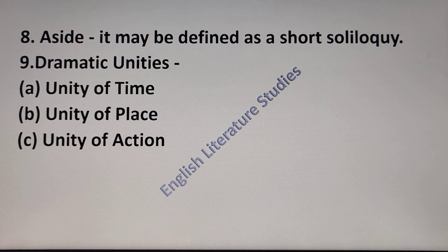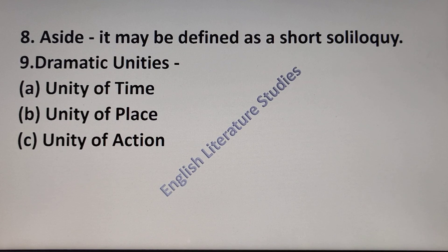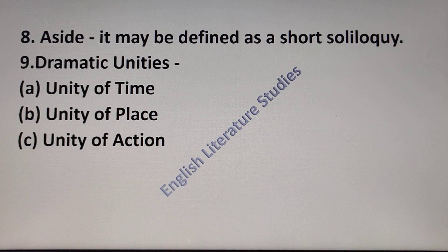The last term is dramatic unities, which is a very important topic in itself. Dramatic unities are the three dramatic principles required to limit the scope and time of drama. Unity of time means action is confined to a single day. Unity of place means use of one scene throughout. Unity of action means concentration on the development of a single plot.